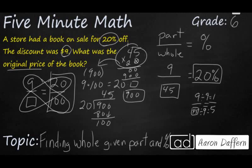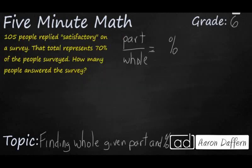Let's look at another example. So in this problem, we have 105 people responding on a survey. That's going to be our part. And that total represents 70% of the people. And so once again, we're looking for our whole.